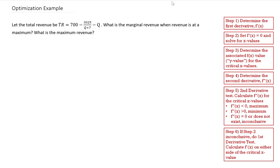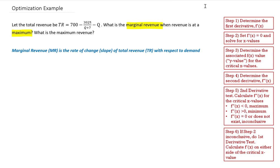Let's start with the first part: what is marginal revenue when revenue is at a maximum? Marginal revenue, MR, is the rate of change or slope of the total revenue with respect to demand. When we're looking at maximum revenue, that first derivative is going to be equal to zero. That slope is equal to zero. Therefore, by definition of marginal revenue, marginal revenue is going to be equal to zero at maximum revenue.